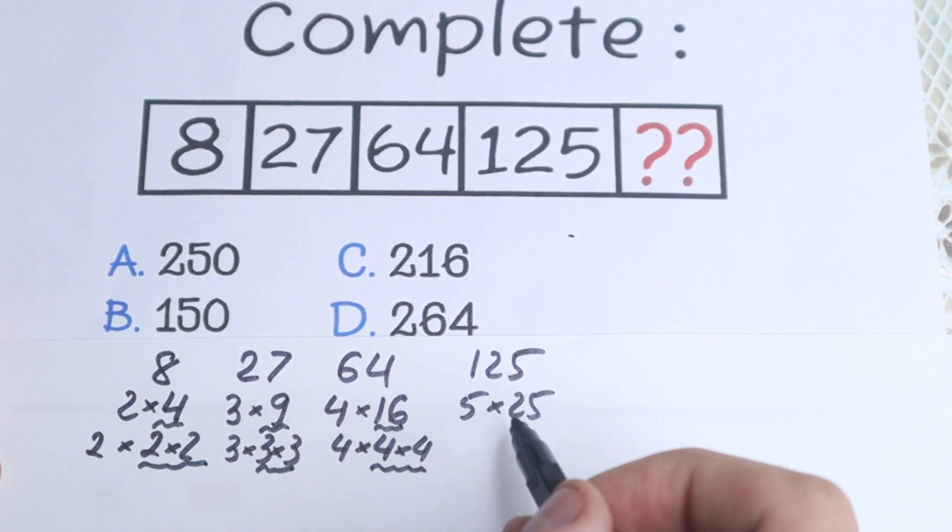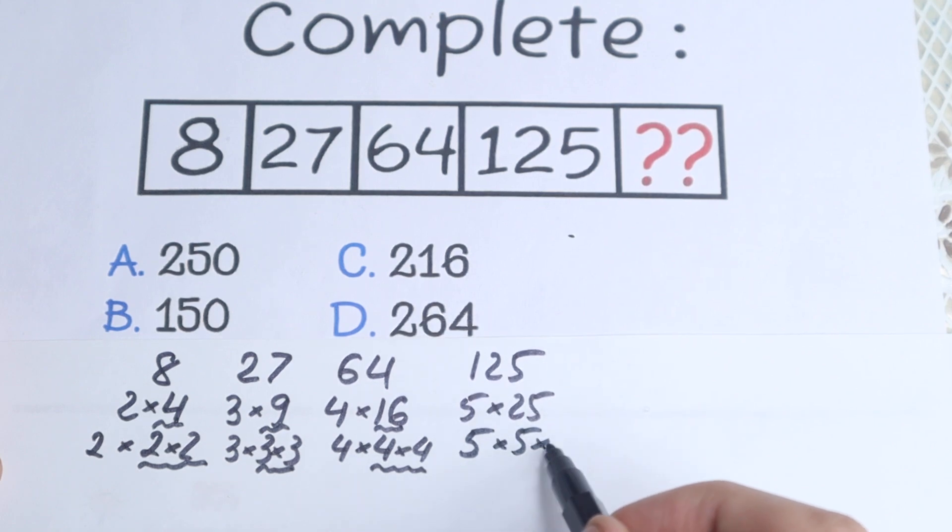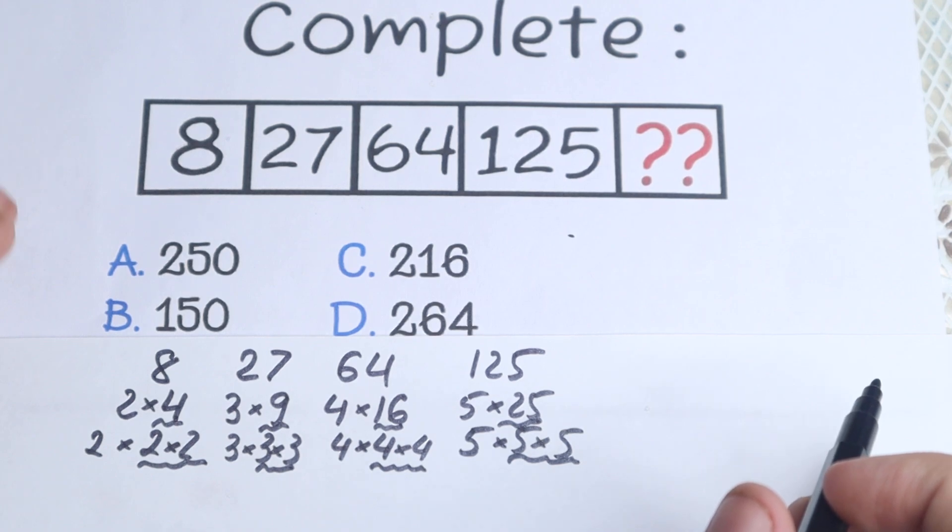What about 25? That's 5 times 5. So 5 times 5 times 5. As you can see, this is really great, because we have all the same numbers.